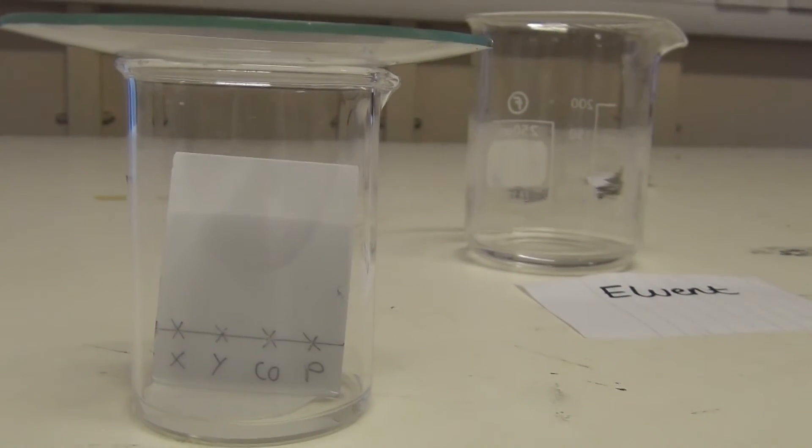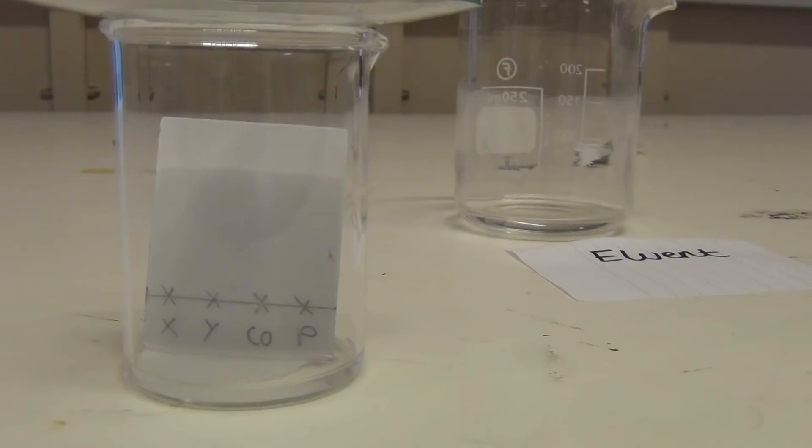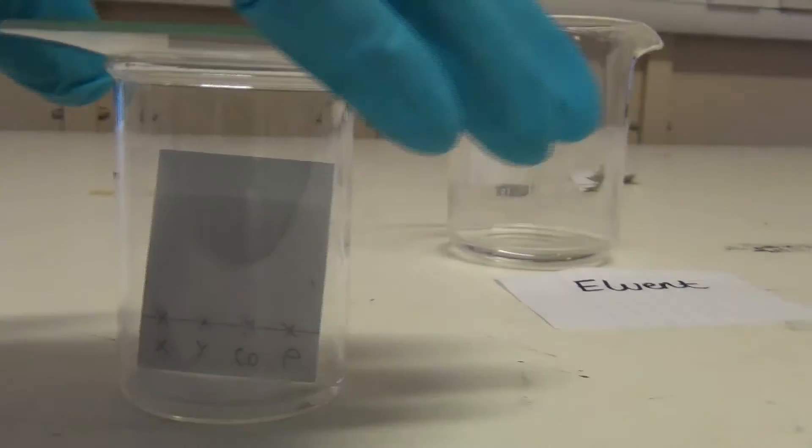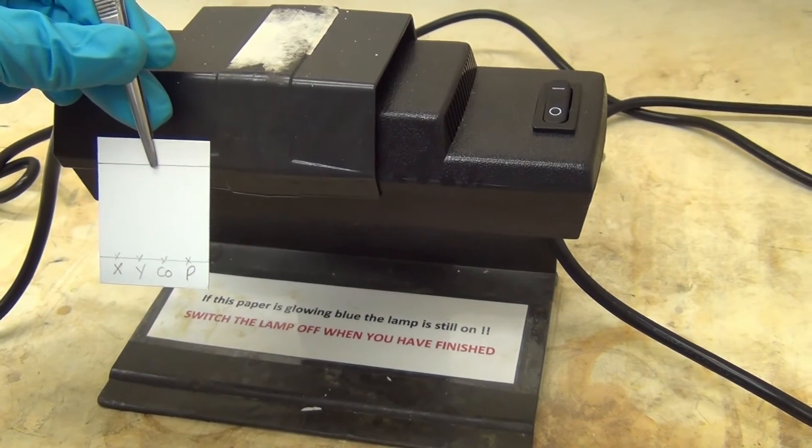Allow the eluent to run up the plate to within around 0.5cm from the top of the plate, and then remove the plate from the chamber using tweezers. Then quickly draw a line marking where the eluent ran up to. This is known as the solvent front, and remember to use pencil.